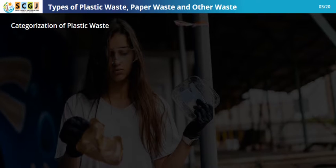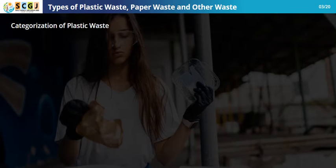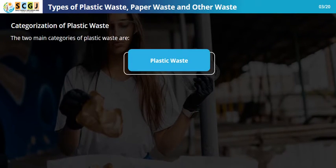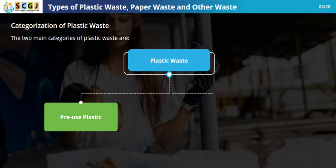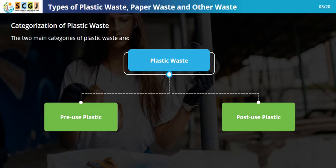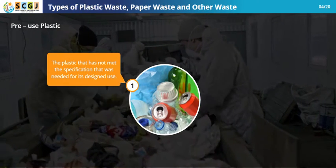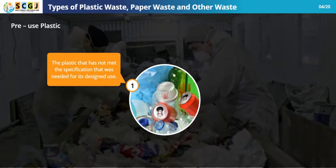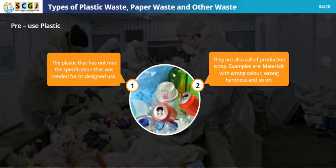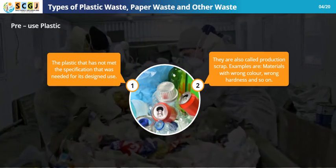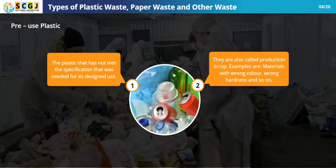To recycle plastic, a waste management manager must know the category to which the plastic belongs. Plastic waste falls into two main categories: pre-use plastic and post-use plastic. Pre-use plastics are types of plastic that have not met the specification needed for their designed use — they are also called production scrap.